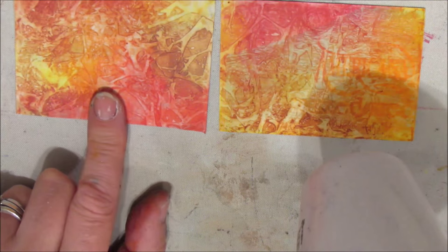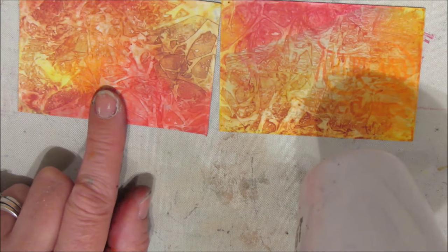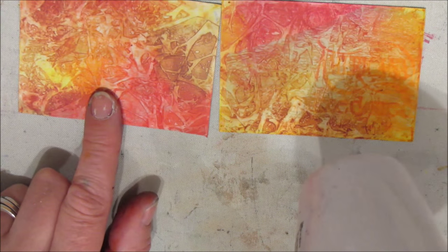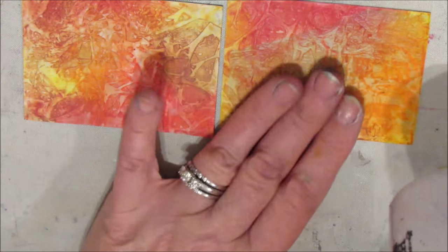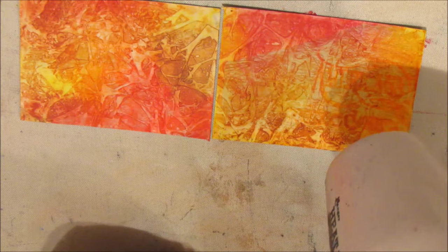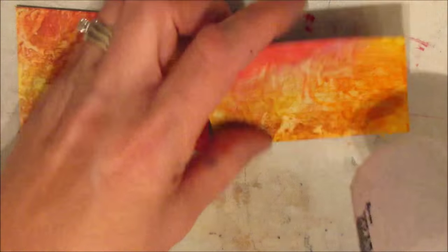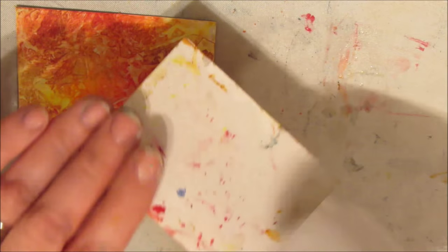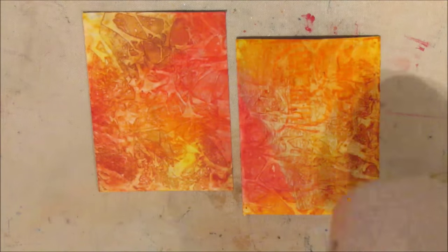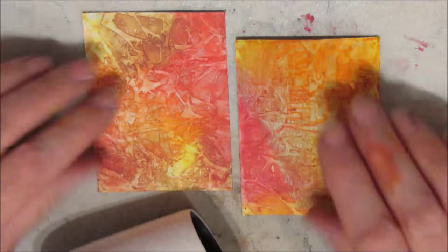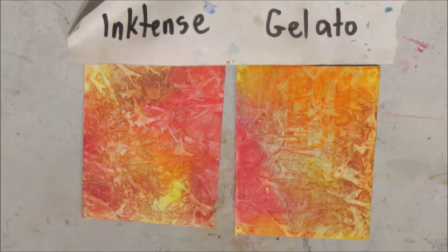Just giving them a good dry. The water had soaked through the cardboard of the card. So they're still very moist underneath. But I don't think if anybody looked at these from here you wouldn't be able to tell or identify which is which. Just giving it a good dry. So Inktense, gelato.